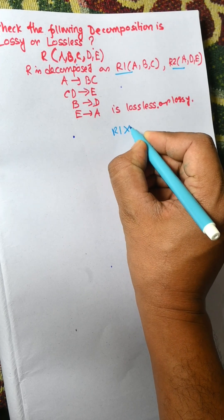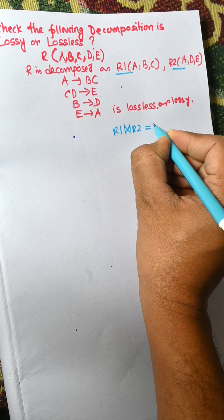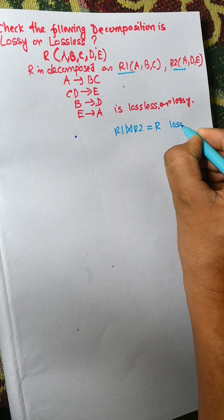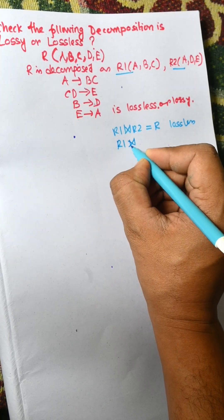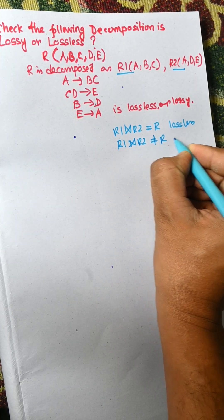R1 natural join R2 equal to R means it is lossless, and R1 natural join R2 not equal to R means it is lossy.